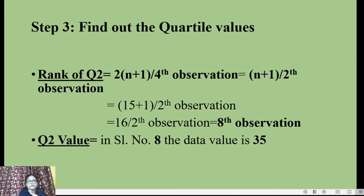Next, we find the Q2 value. Its rank = (n + 1) / 2 = (15 + 1) / 2 = the 8th observation. In the data arranged in ascending order, at serial number 8, the value is 35. So Q2 = 35.